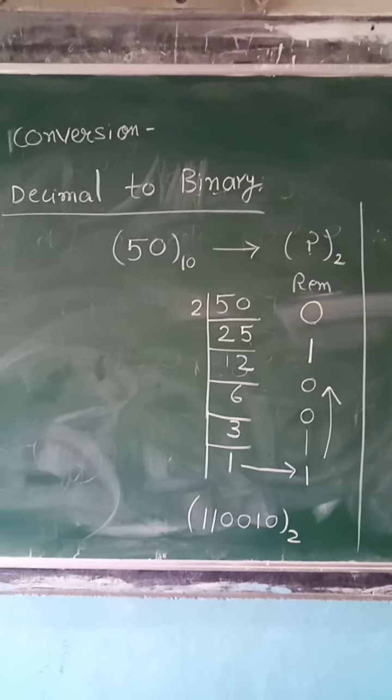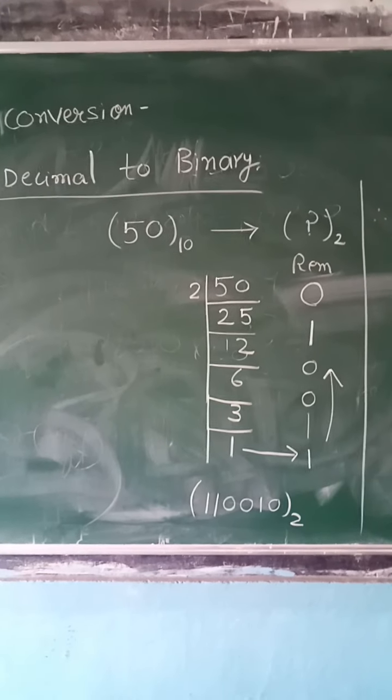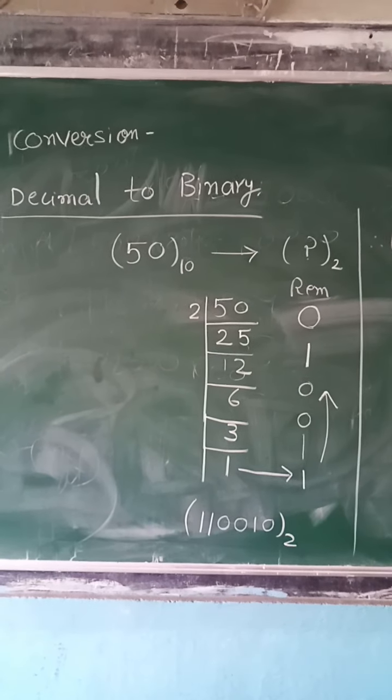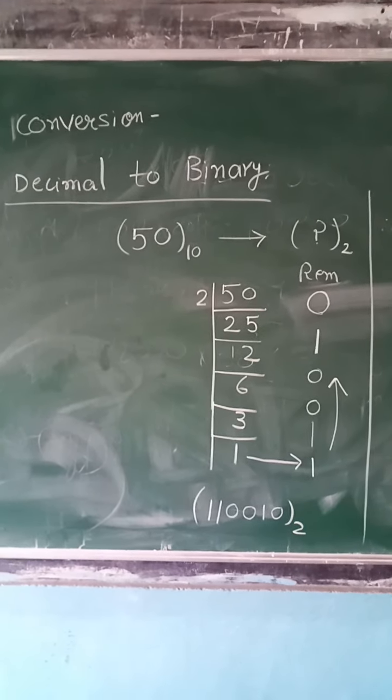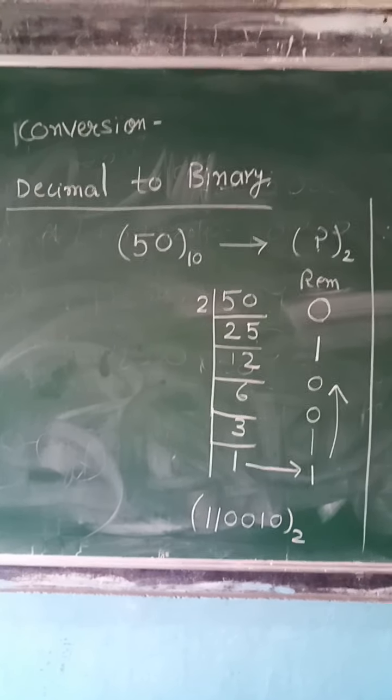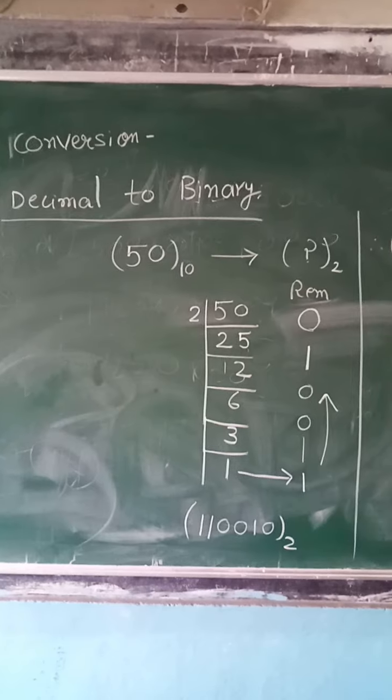Similarly, again 25 is divided by 2. Now remainder will be 1, your quotient is 12, this quotient 12 will again divide it by 2. Now you will get remainder 0.